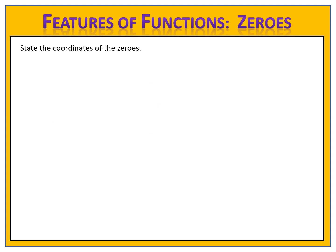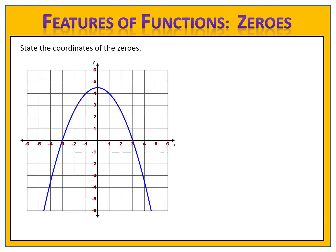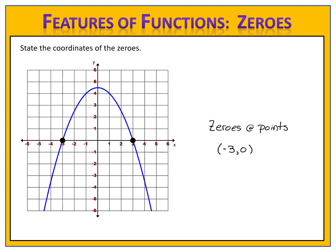Let's try another example. Can you state the coordinates of the zeros for this function? Pause the video and come back when you're ready to check your answer. We look along the x-axis and see that this function has two points of intersection — those are the zeros. The coordinates are negative three, zero and positive three, zero. Those points are the coordinates of the zeros of the function.